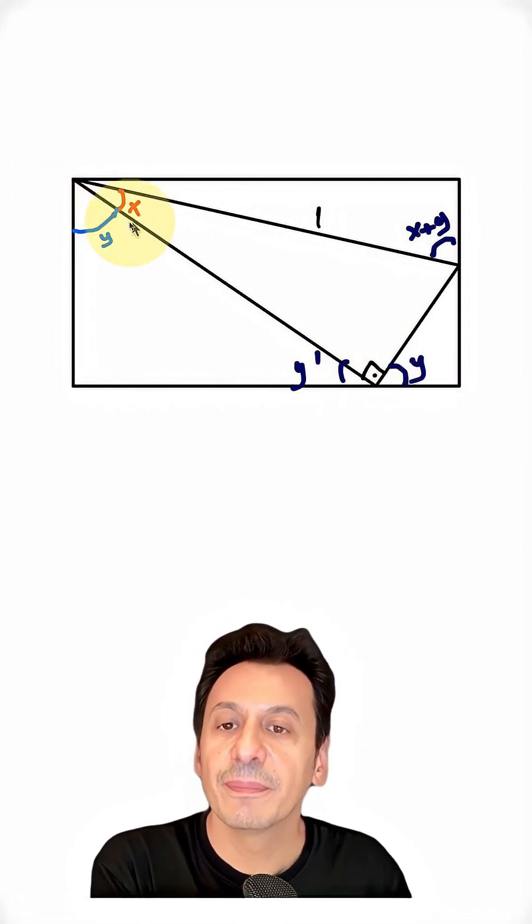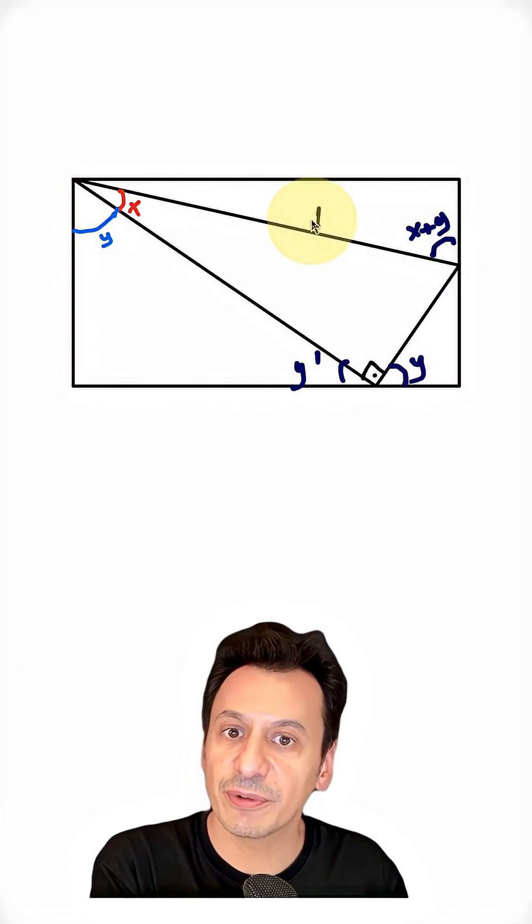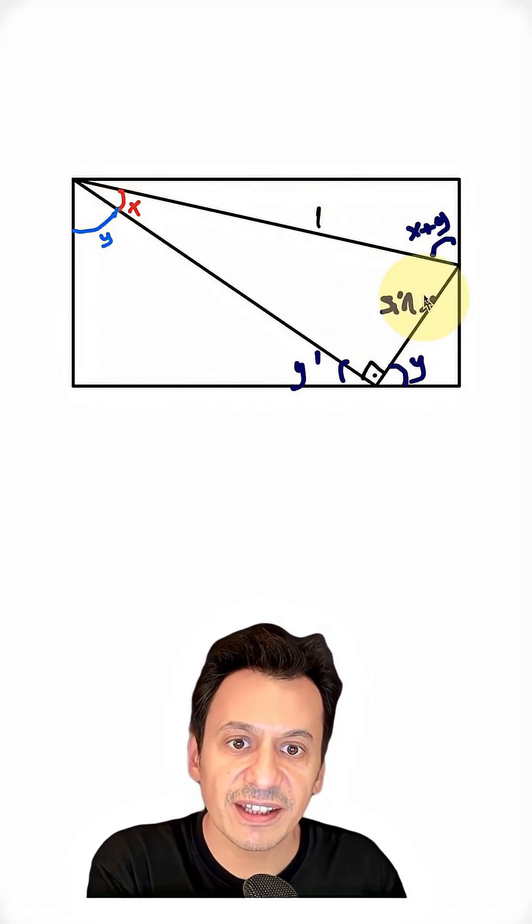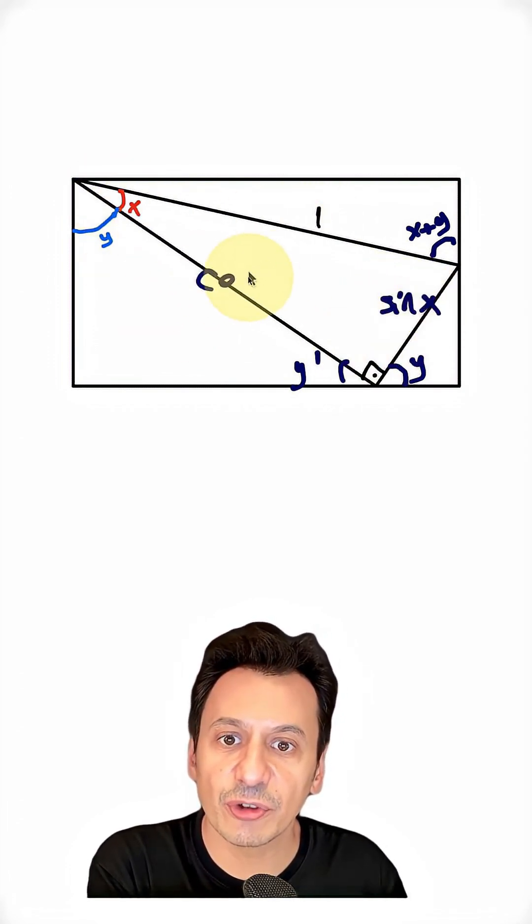Now this is a right triangle. My angle is x and my hypotenuse is 1. Then I can label the side opposite as sine x and the adjacent side as cosine x.